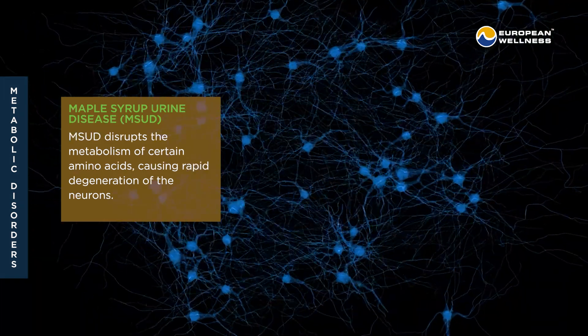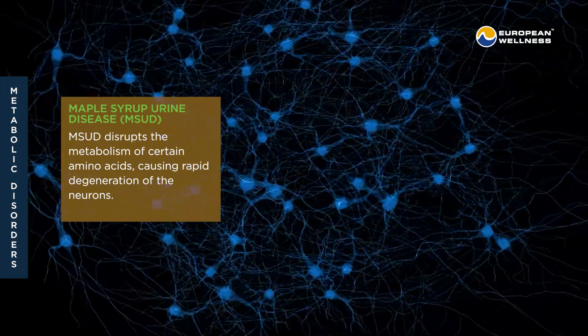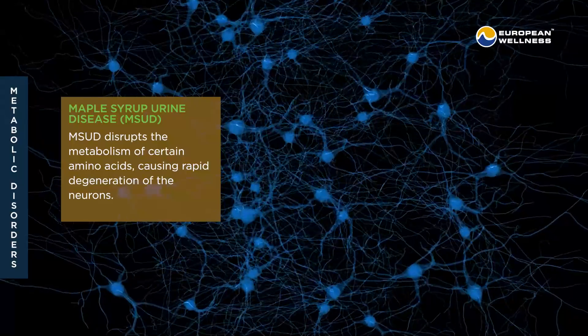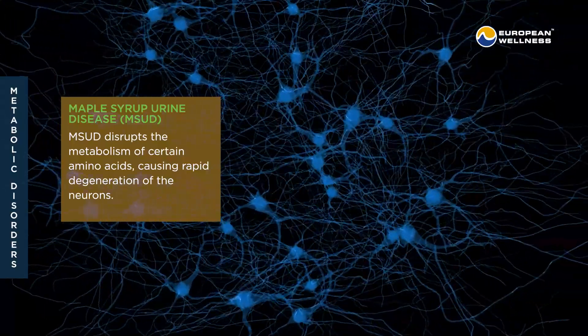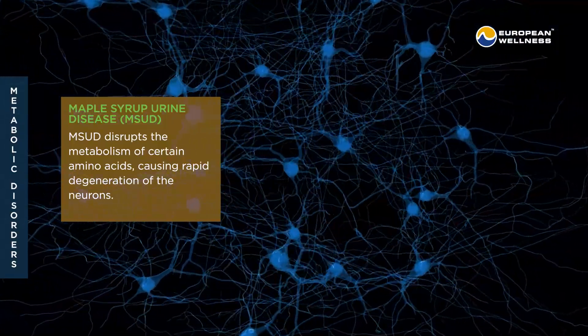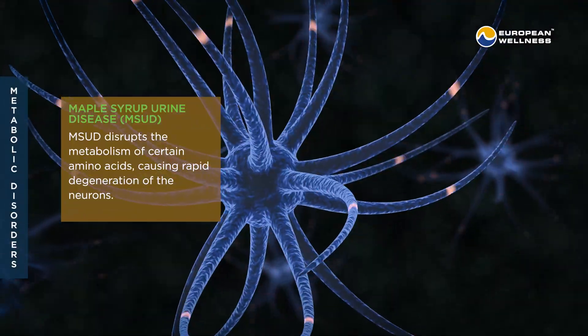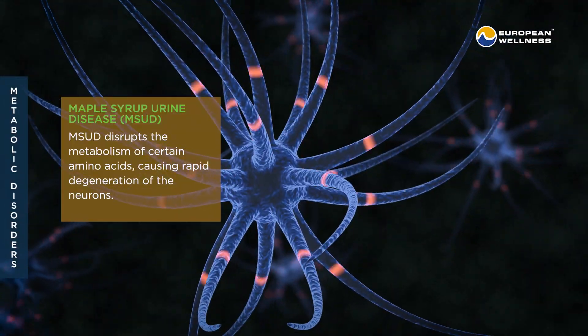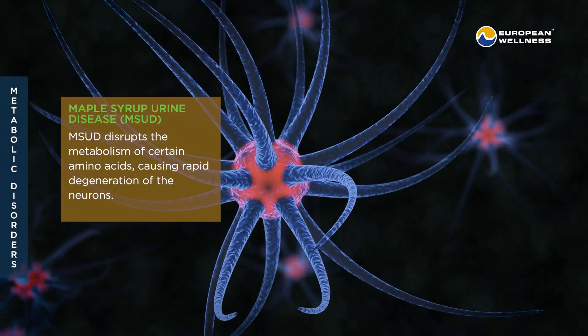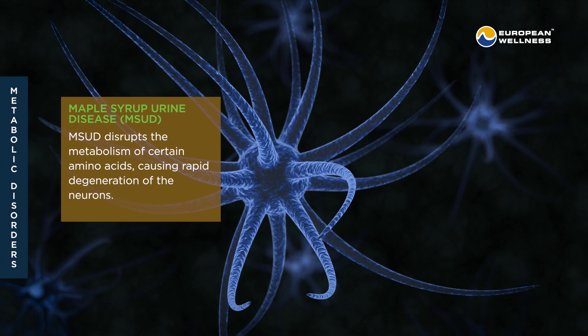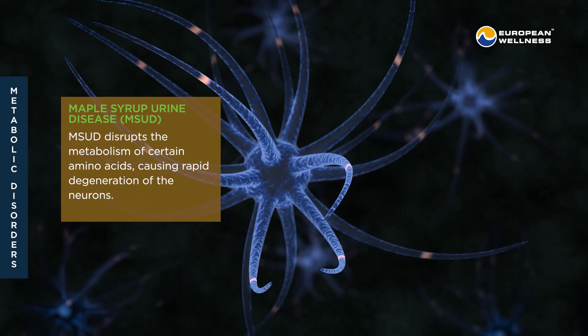Maple syrup urine disease, or MSUD, disrupts the metabolism of certain amino acids, causing rapid degeneration of the neurons.